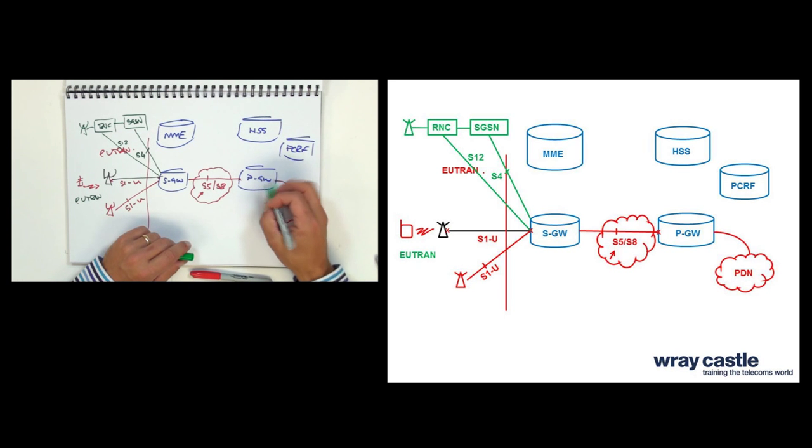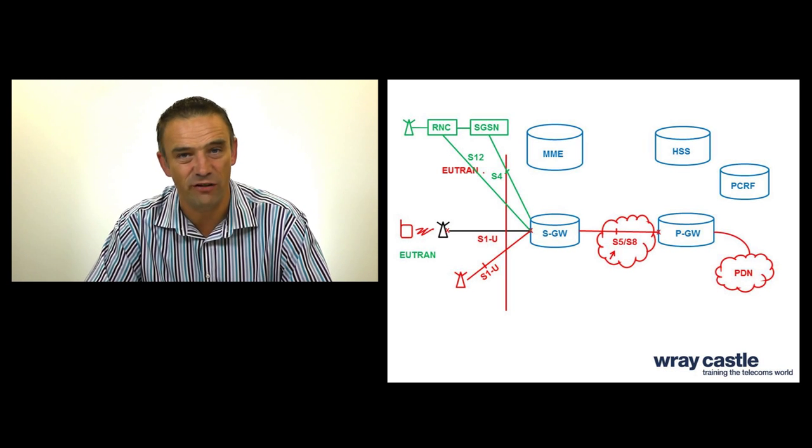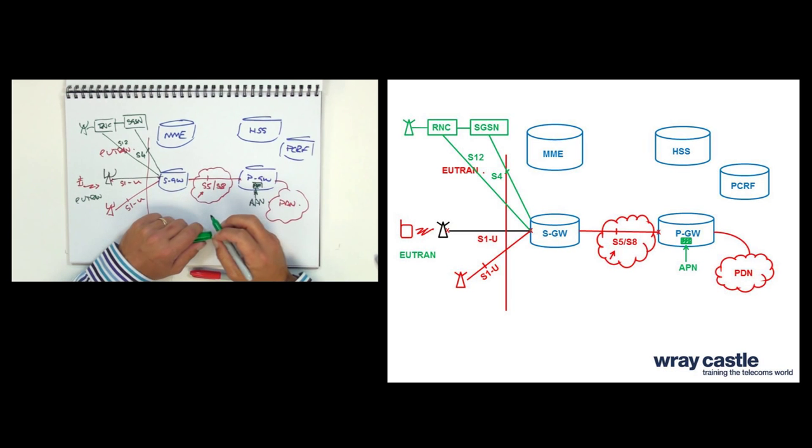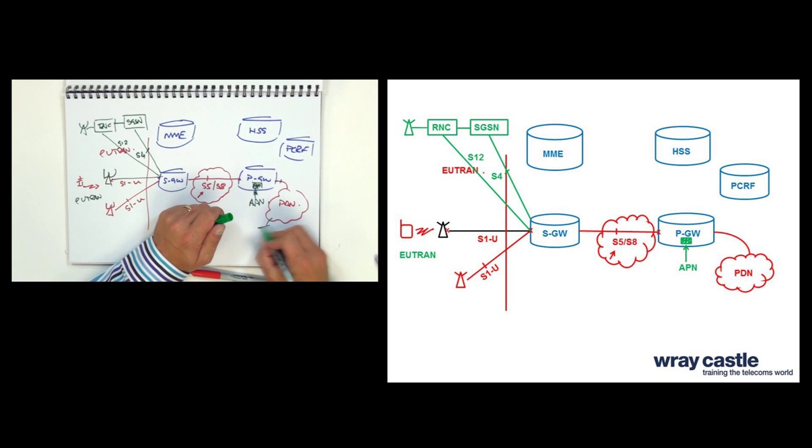So the next node we have is a PDN gateway. And again, that PDN gateway is almost identical to a GGSN, a gateway GPRS support node. The main thing to point out about the PDN gateway is it houses the APN. And that APN is the access point name, which is effectively the IP address of the interface that you want to connect to, i.e. the packet data network that you're interested in. So we've got the serving gateway and the PDN gateway.